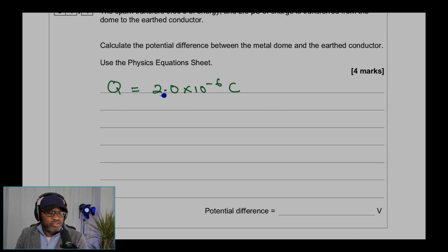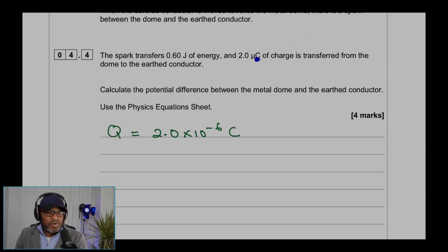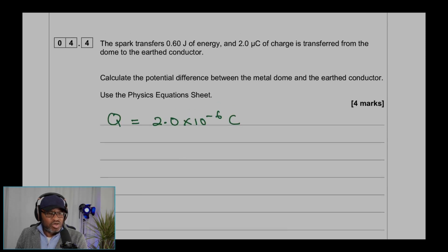The charge is 2.0 times 10 to the power minus 6. Micro means 10 to the power minus 6, which is 1 over a million. So that would be 2 divided by a million, or 2 times 10 to the power minus 6 coulombs. That's the charge.